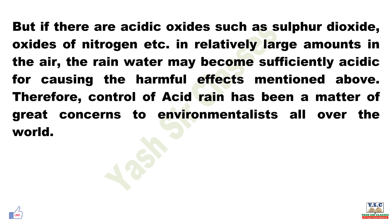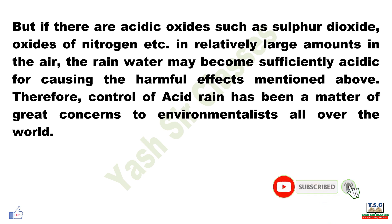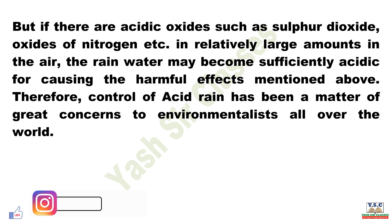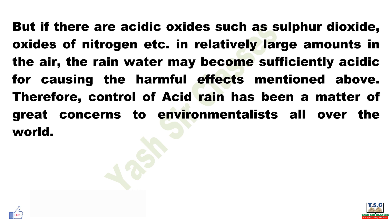But if there are acidic oxides such as sulfur dioxide and oxides of nitrogen in relatively large amounts in the air, the rain water may become sufficiently acidic for causing harmful effects. Therefore, control of acid rain has been a matter of great concern to environmentalists all over the world.